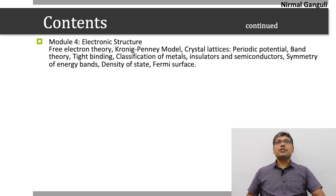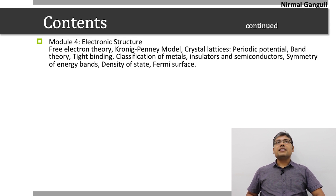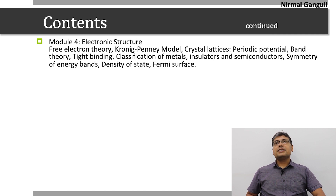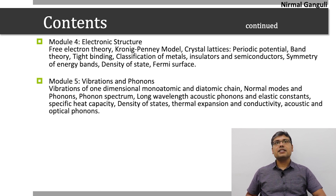After this, we move on to the fourth module on electronic structure. We begin with the free electron theory, then move on to the Kronig-Penney model, crystal lattices, electrons under periodic potential, band theory, tight binding model, classification of metals, insulators and semiconductors, symmetry of energy bands, density of states and Fermi surfaces.